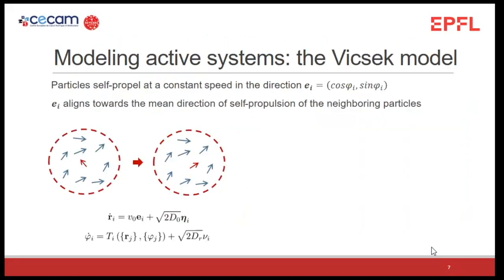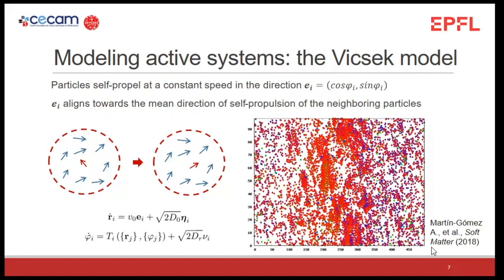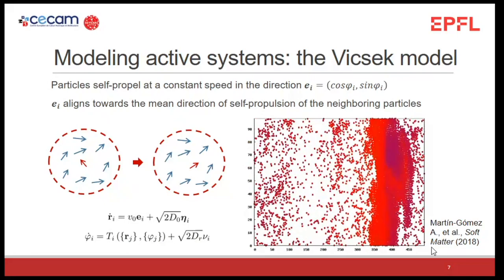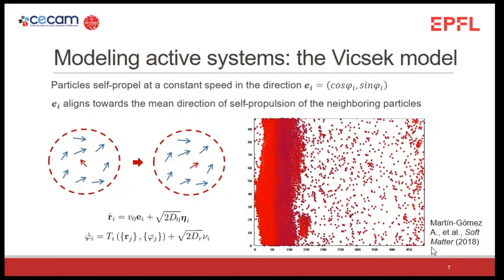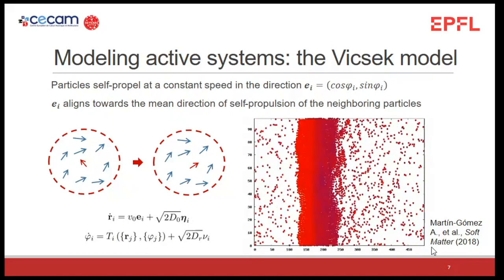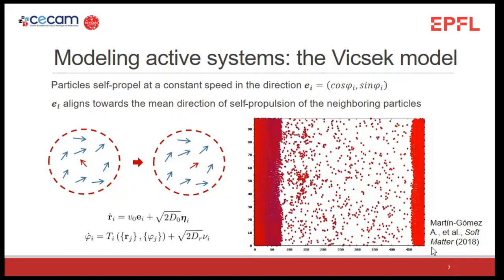The Vicsek model describes point-like particles that self-propel and align their direction of self-propulsion with that of their neighbors. In this kind of system we observe the flocking phase transition. At high enough alignment strength, the system shows the onset of global orientational order — particles can align and swim collectively. We see the formation of traveling structures, like a band moving across the simulation box, as shown by results from a former student of our group.